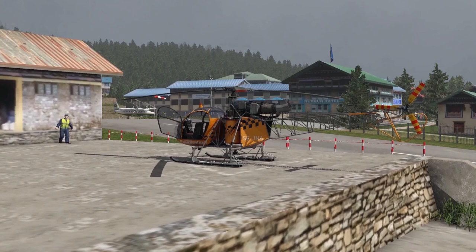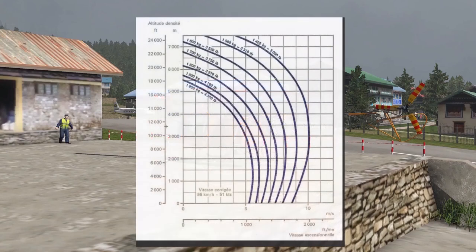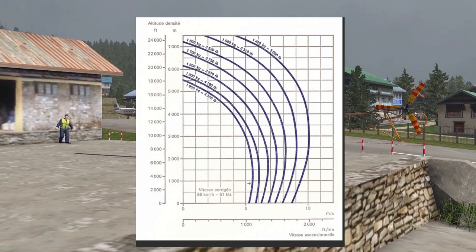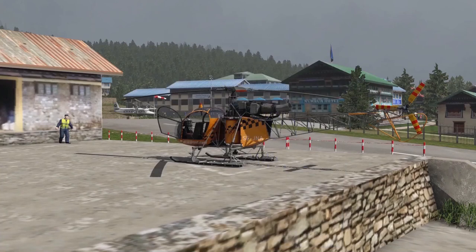Now for our best rate of climb. Enter the chart on the left-hand scale at density altitude 11,300 feet. Draw a straight line to the right until you hit your current gross weight of 3,650 pounds - pretty much in the middle between the two graphs. From there, draw a straight line down and read your best rate of climb, which is about 1,400 to 1,500 feet per minute. You don't necessarily have to climb that fast; it just means this is the most effective rate of climb for your current load and weather conditions.